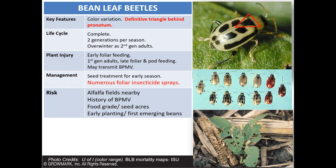Other risk scenarios for bean leaf beetles include nearby alfalfa fields, which serve as an alternate host. A history of the virus in a particular field also represents risk, because overwintered beetles can acquire it from infected plants and transmit it to newly planted fields. Food grade and seed acres are probably acres where seed treatments can provide a lot more value. If your soybeans are the first ones to emerge in an area, that's also a high-risk scenario, because those overwintering beetles will be heavily attracted to those first emerging beans.